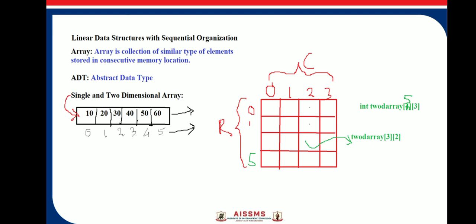For example, if we want to store names of students in a class, we can use an array to store the names in sequential form. Simply put, an array is a set of consecutive memory locations which contains similar data elements.